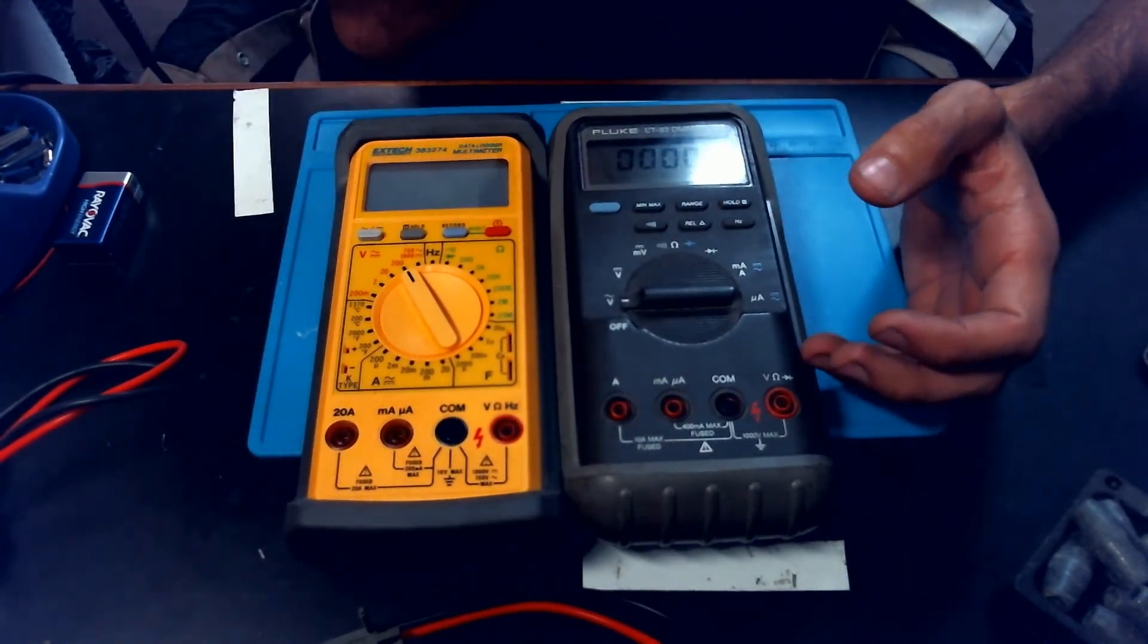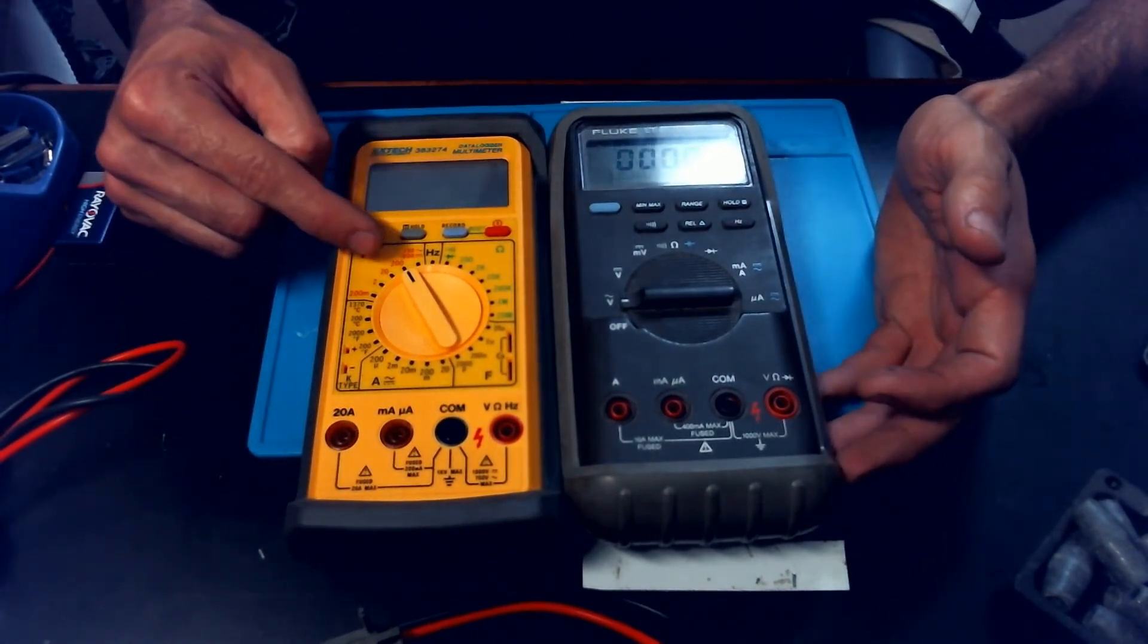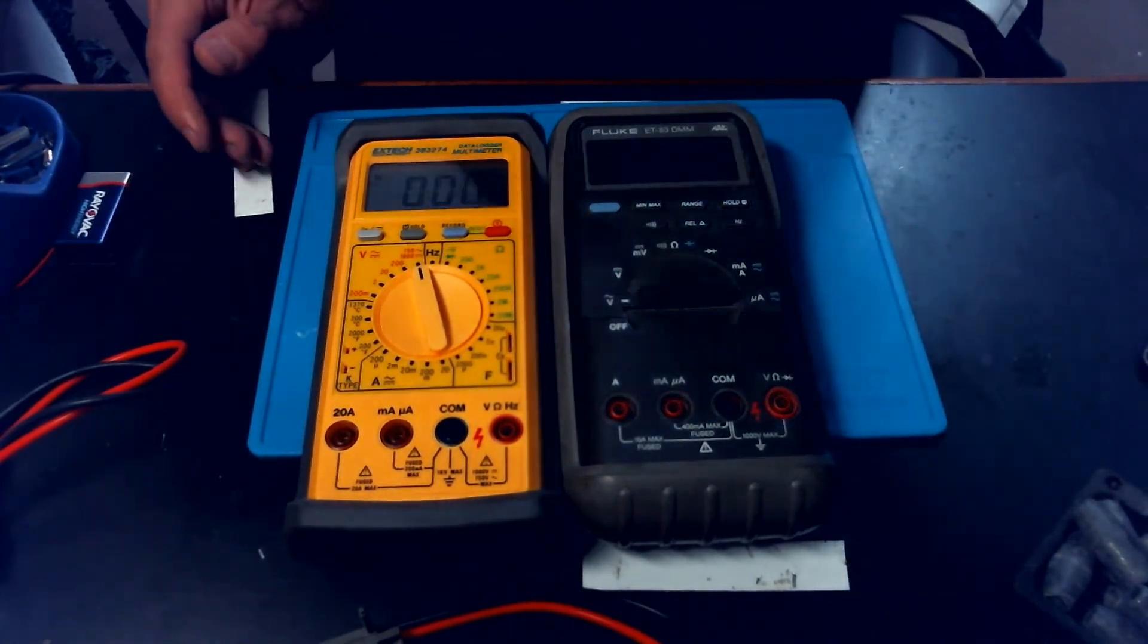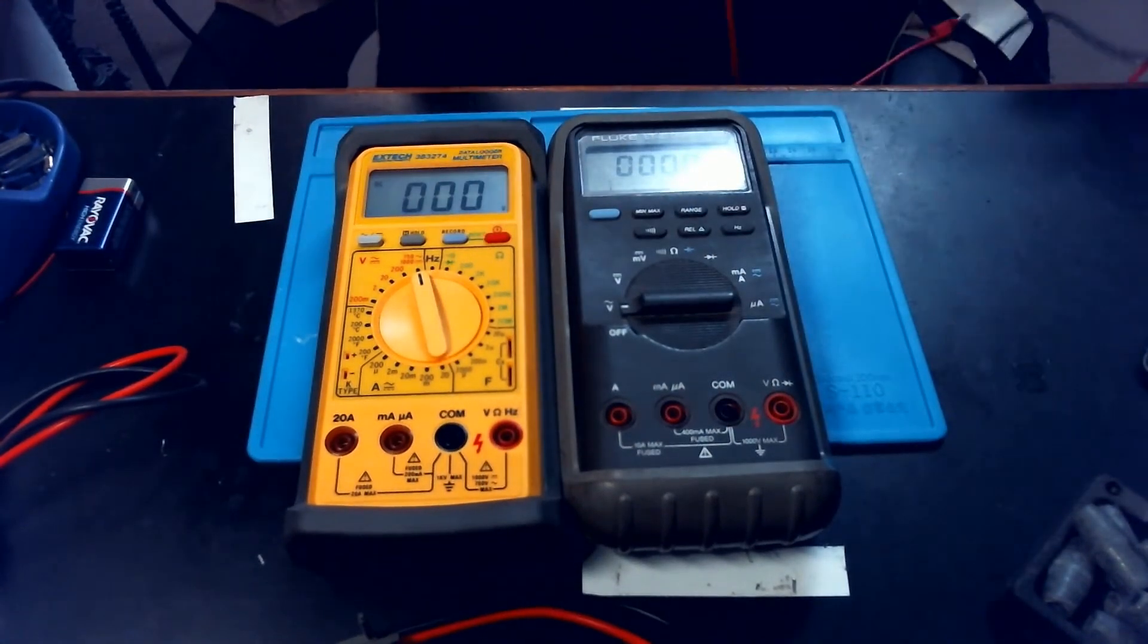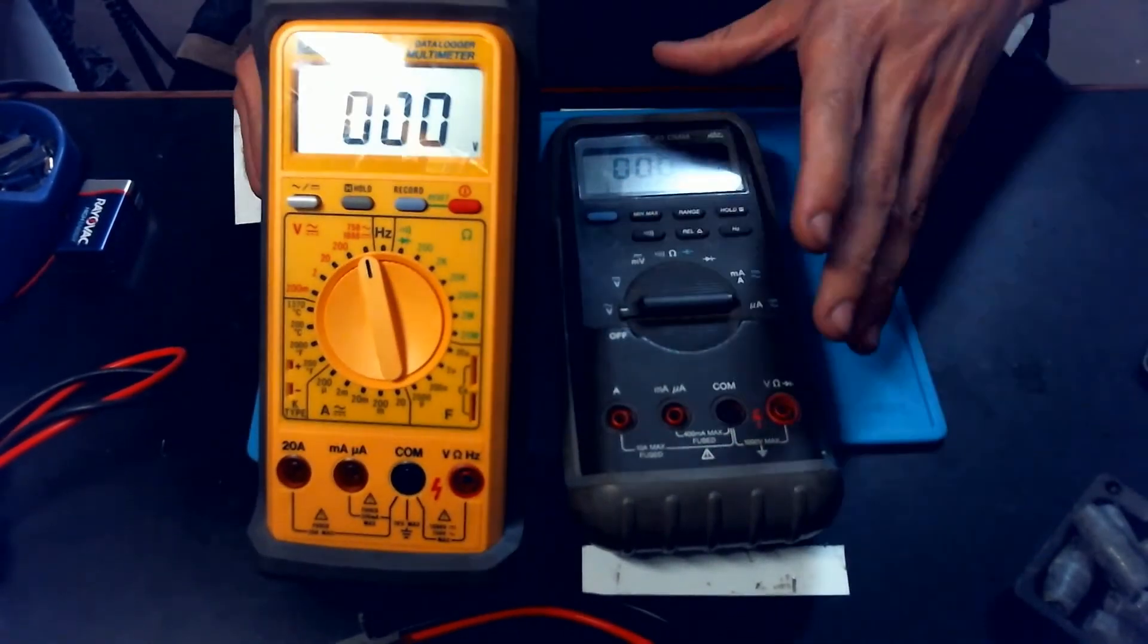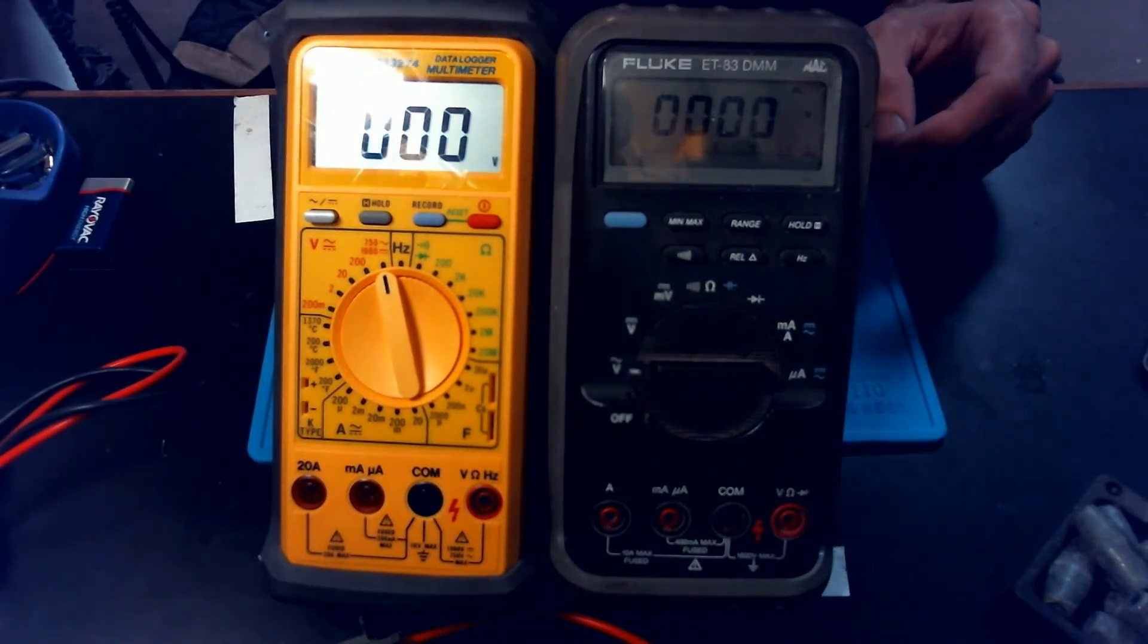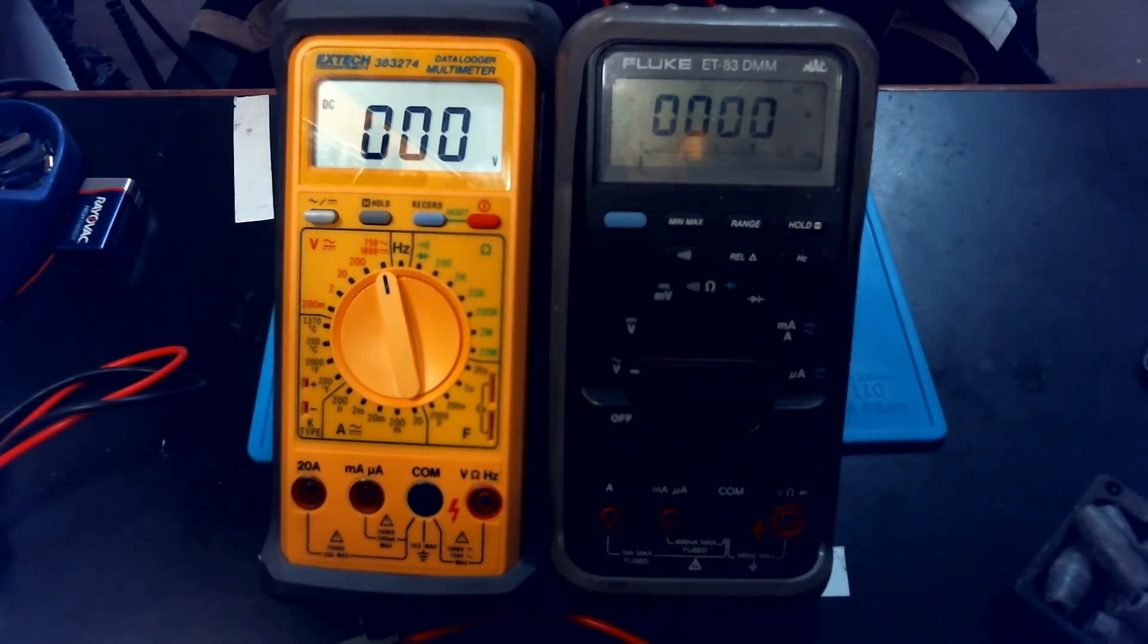Because what happens with ranges on meters, you might be wondering, well, if I just leave it on the highest range all the time, then it doesn't matter, because it's going to automatically know what it needs to know. And while that's true, what you lose, and I'll try to demonstrate that, is your resolution. And resolution and accuracy go hand in hand. You can have a very accurate meter, but if the resolution on it is bad, then that accuracy gets you nowhere.